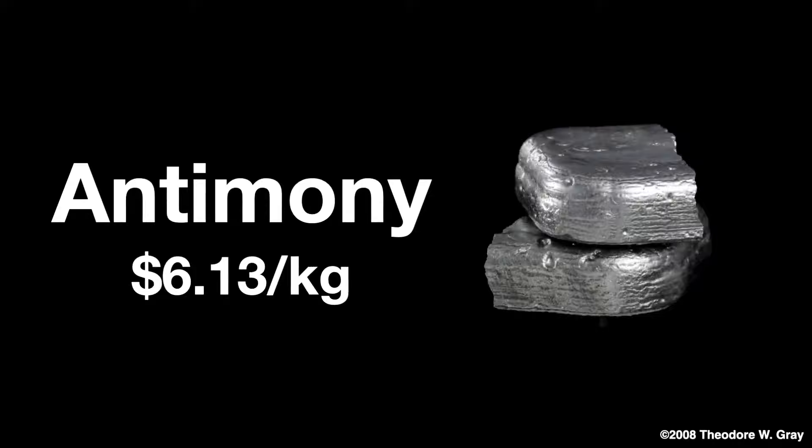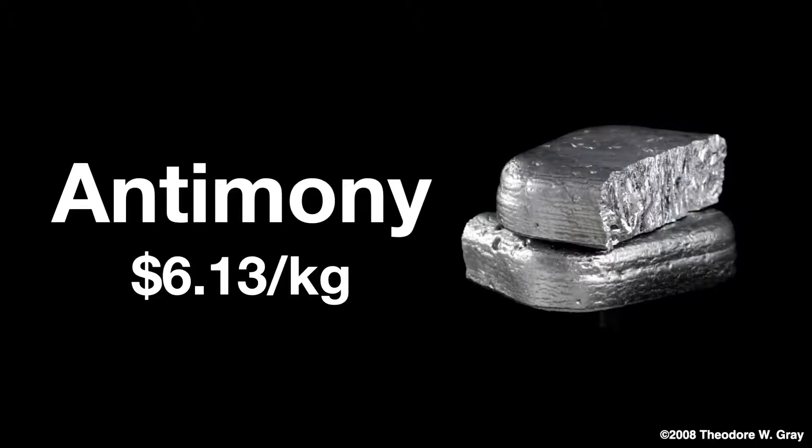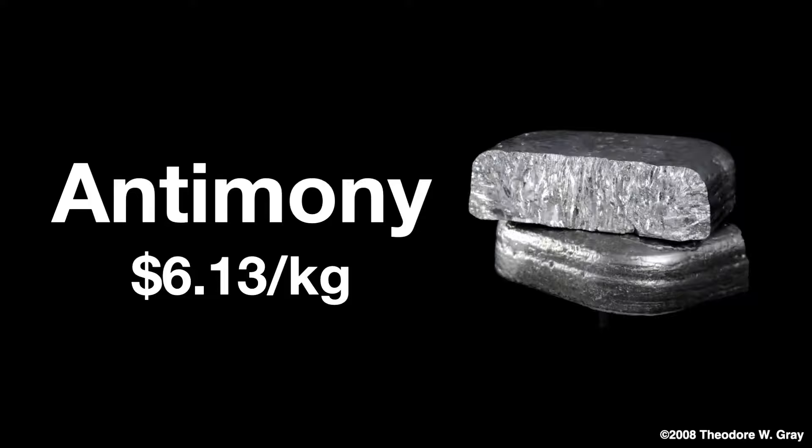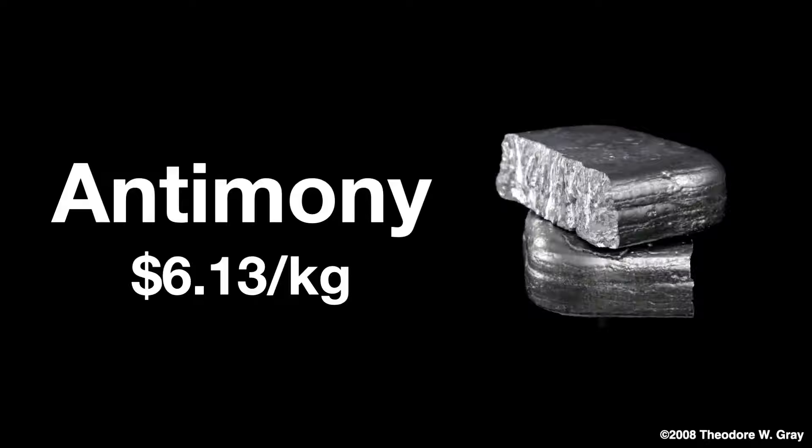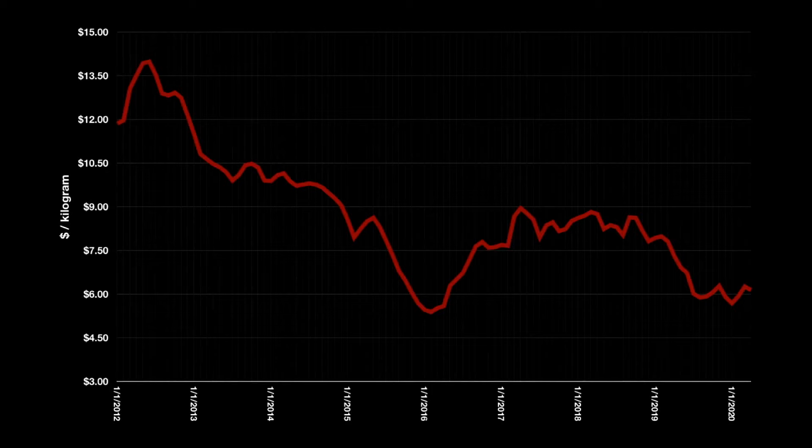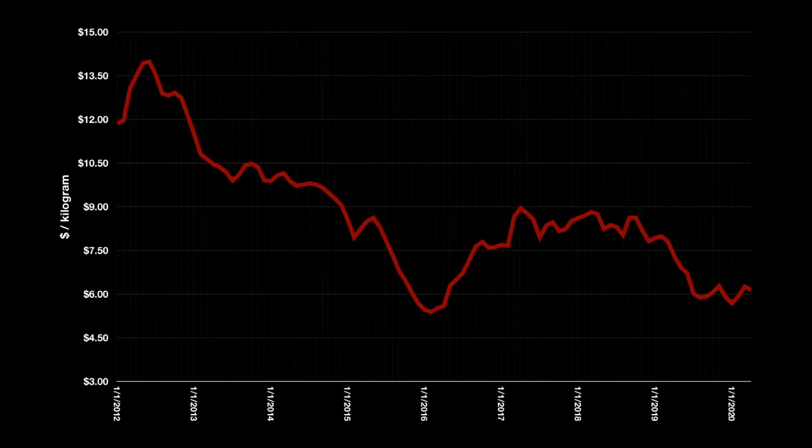The current cost of antimony is about $6.13 per kilogram. Given its rarity, I'm not sure I understand this. Gold is only slightly more rare in the Earth's crust and is almost $61,000 per kilogram. It probably has something to do with the fact that it's brittle, slightly toxic metal that is chemically reactive, whereas gold is inert, shiny, and malleable. Over the past eight years, antimony reached a high of almost $14 per kilogram. If you had bought it in 2002 when it was only a dollar per kilogram, you could have made some serious cash if you sold it at the peak.